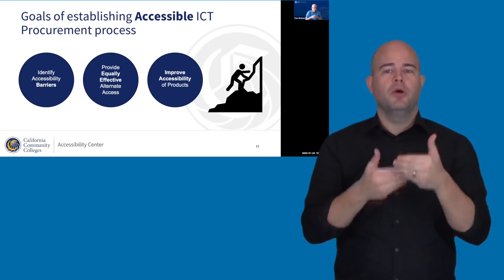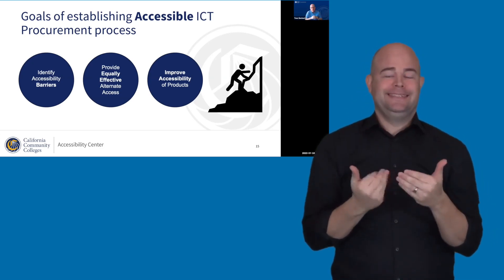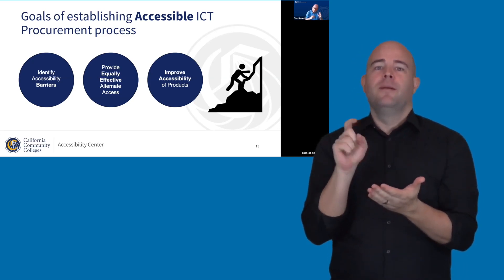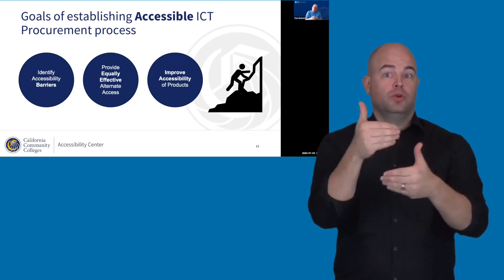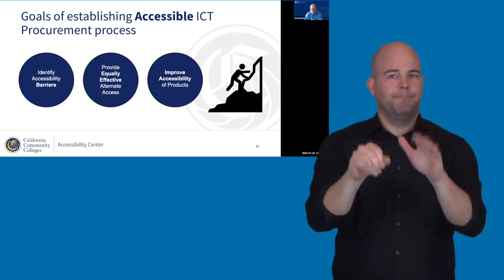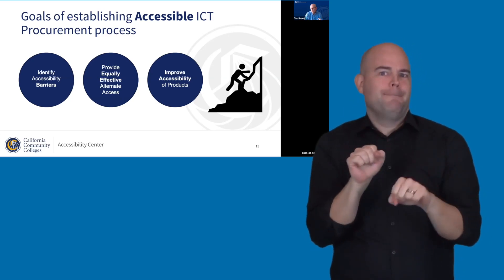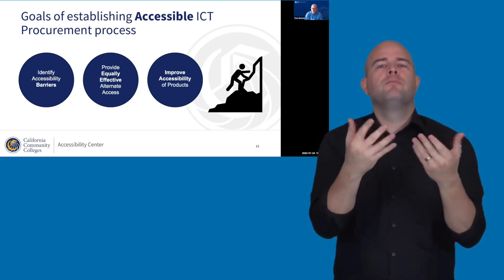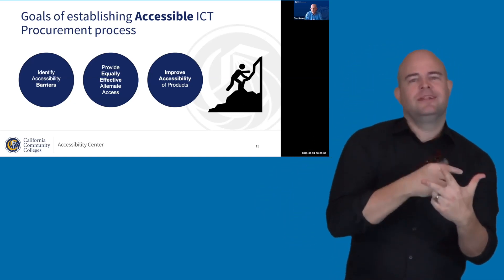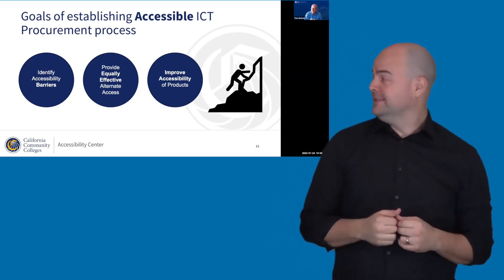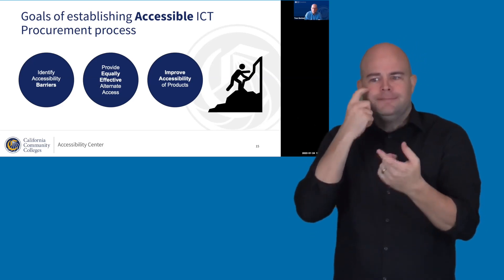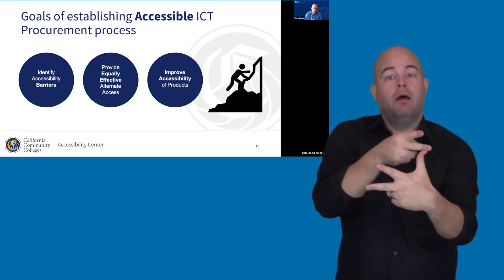For procurement processes, it's easy to put processes in place, but harder to make them effective and meaningful. To meet that bar, you need to achieve three goals. First, identify accessibility barriers — without this, the other two goals are simply not possible. Second, provide equally effective alternate access, which requires knowing what the barriers are. And third, improve the accessibility of products over time — a collaborative process with vendors that also relies on identifying specific barriers they can work to fix.